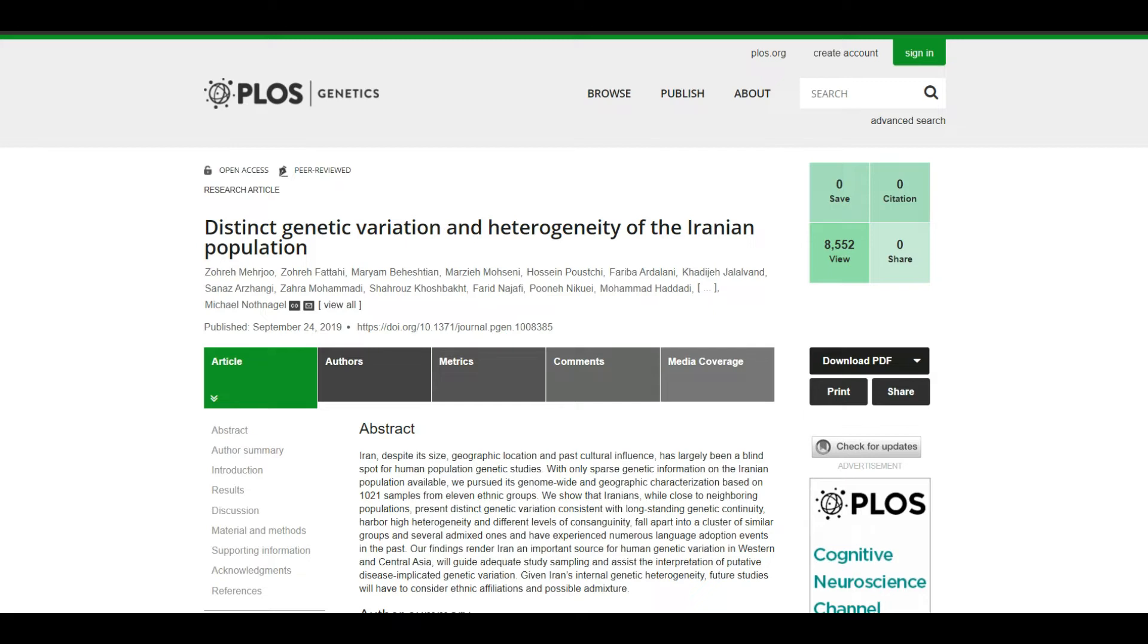This is incredible. It also showed the PCA charts which showed the clustering of these different population groups. Now I'm just going to go through the PCA charts and a summary was provided by the website known as PHYS.ORG.